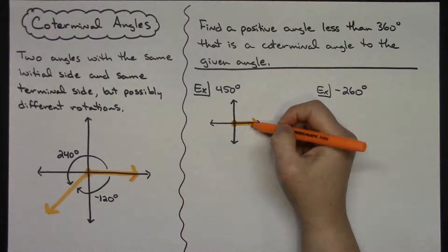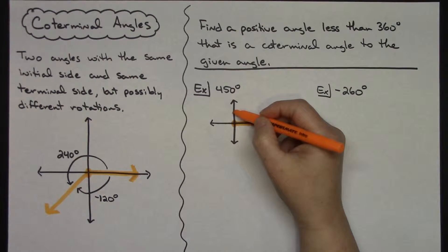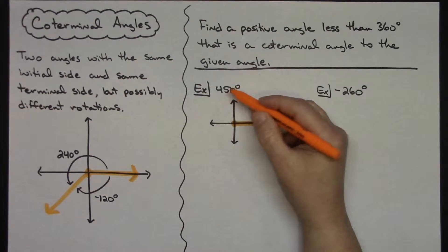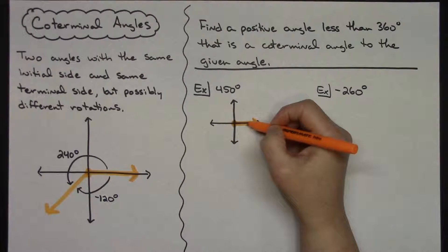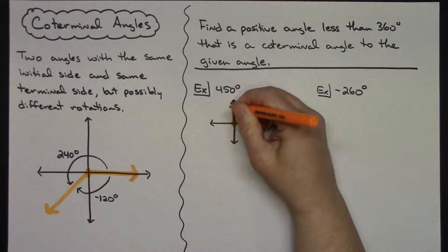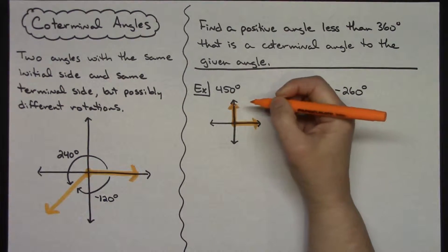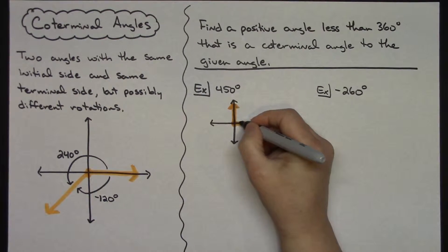But I've got to go all the way up to 450, and that's going to be another 90 degrees. So 450 degrees is all the way around the circle plus another 90, which makes the terminal side right there.